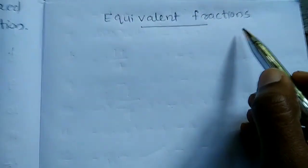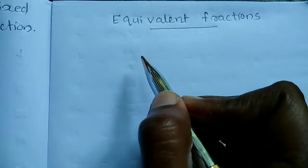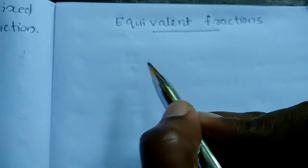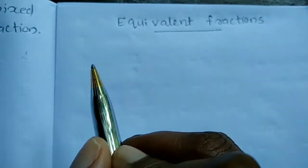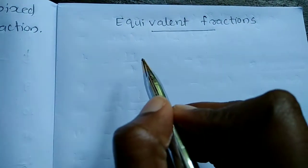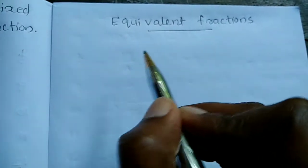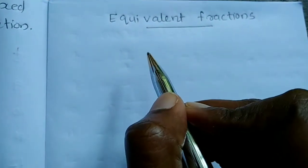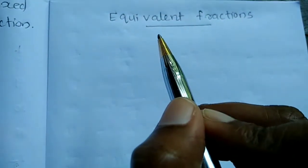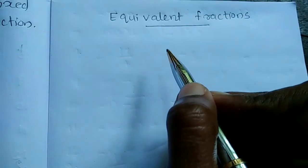Equivalent fraction. To find an equivalent fraction of a given fraction, we multiply or divide both the numerator and the denominator of the given fraction by the same non-zero number.